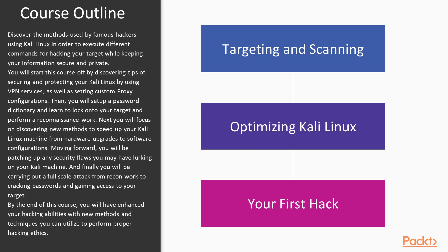This covers every step we're going to be learning in our course. The first pillar is targeting and scanning — knowing your target through reconnaissance and network scanning in Kali Linux. The next one is optimizing your Kali Linux, giving it enough speed so you won't have a slow machine while doing hacking or password dictionary scanning. And the last one is your first hack, which shows you how to execute your first hack and how to cover your IP address.